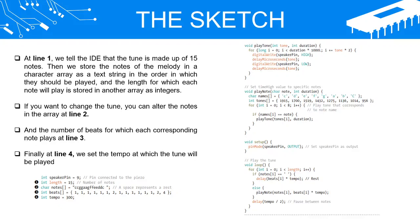If you want to change the tune, you can alter the notes in the array at line 2, and the number of beats for which each corresponding note plays at line 3. Finally, at line 4, we set the tempo at which the tune will be played.